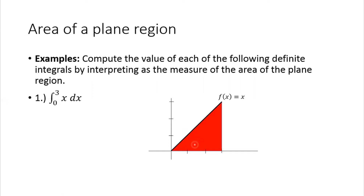What's the base? We have 3 units in the base of the triangle. The height of the triangle is also 3 units. Therefore, applying the formula, we have A = base times height over 2, so that's 3 times 3 over 2. We have 3 times 3 equals 9 over 2. Therefore, the area of this triangle is 9/2.